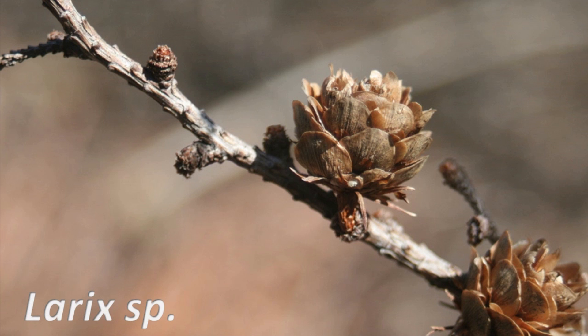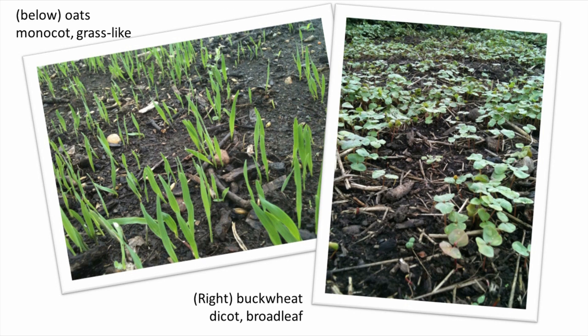Pines, spruces, firs, and others are cone-bearing, which is why we call them conifers. Jumping back to angiosperms, our flowering plants can be further divided into our broadleaf types, called dicotyledons, and our grass-like plants, called monocots.